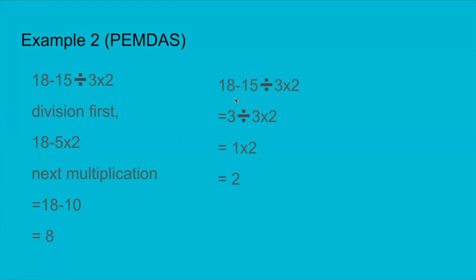Sometimes people solve from left to right without following the rule. To show why that is wrong: 18 − 15 = 3, then 3 ÷ 3 = 1, and 1 × 2 = 2. That answer is wrong because you are not following the rule. You have to do division first, then multiplication, then subtraction.